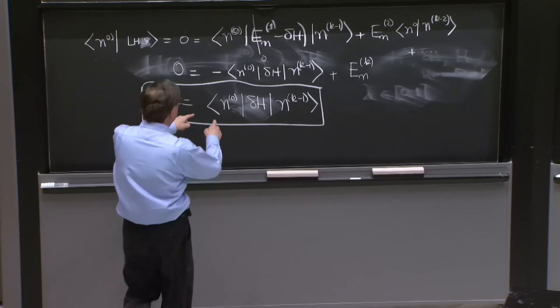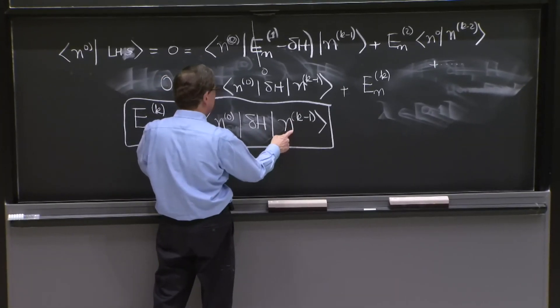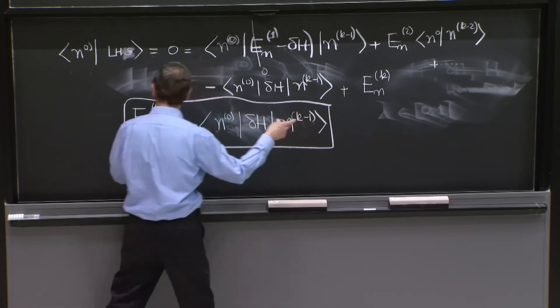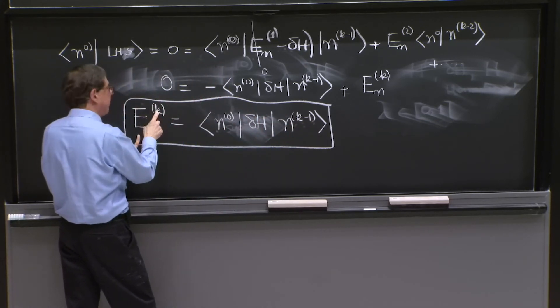It tells you that the kth order energy is given if you know the k minus 1 state. If you have figured out the k minus 1 correction to the state, then you know the energy of the kth correction.